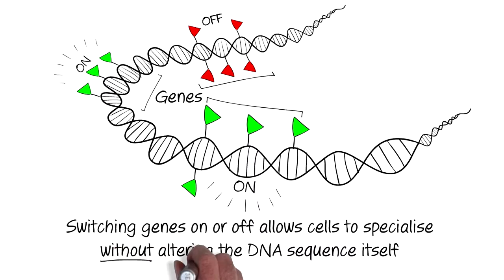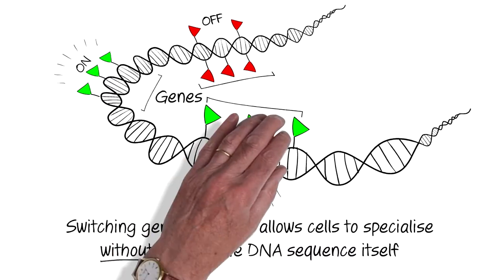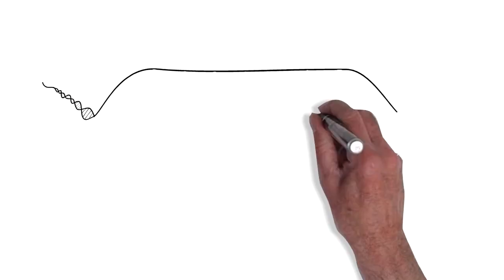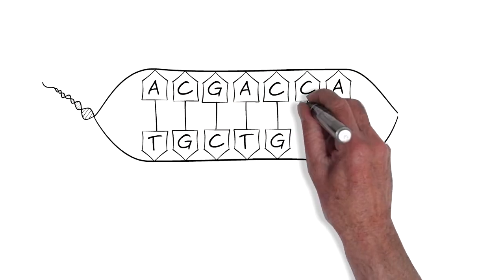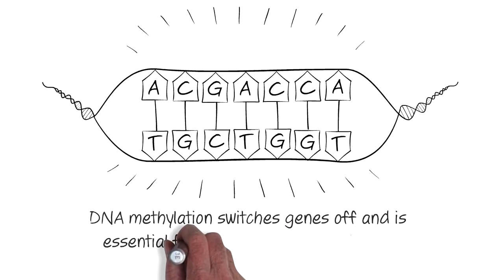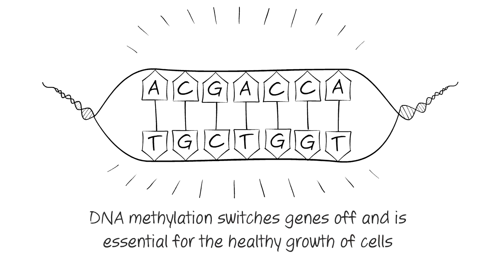This process does not alter the DNA sequence itself. DNA methylation is one of the epigenetic processes that switches genes off without changing the underlying DNA sequence. DNA methylation is essential for the healthy growth and development of cells in mammals.